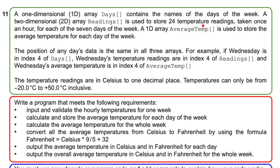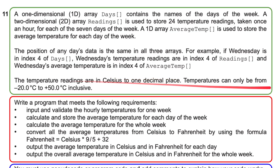Based on the 24 temperature readings for that particular day. The position of any day's data is the same in all three arrays. For example, if Wednesday is in index 4 of days, Wednesday's temperature readings are in index 4 of readings, and Wednesday's average temperature is in index 4 of average temperature. The temperature readings are in Celsius to one decimal place, so we may have to do some rounding. Temperatures can only be from minus 20 degrees to plus 50 degrees Celsius inclusive — so there's some validation required.